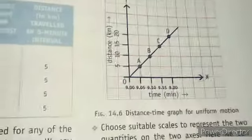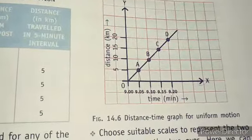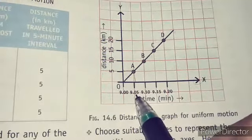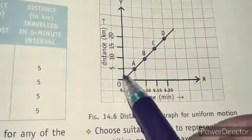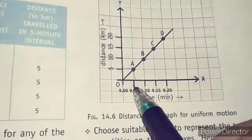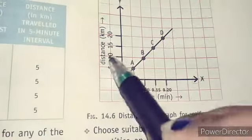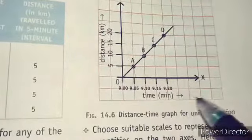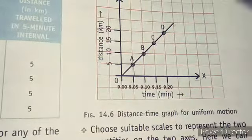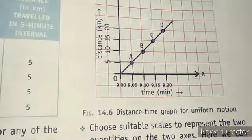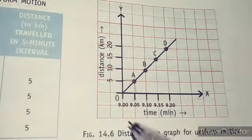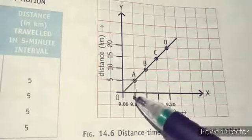Here we have the time distance graph for uniform motion. For example, from 9:00 to 9:05, the distance is 5 kilometers. From 9:05 to 9:10, the distance and time remain the same in both conditions. If the time and distance mismatch, it would be non-uniform motion. But in uniform motion, we have fixed time and fixed distance, so the graph can be plotted in a straight line.